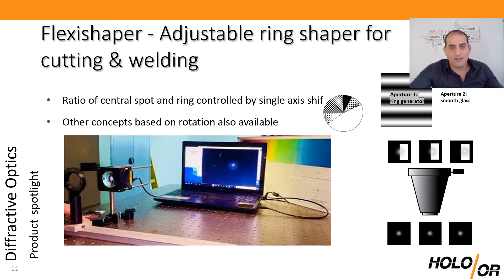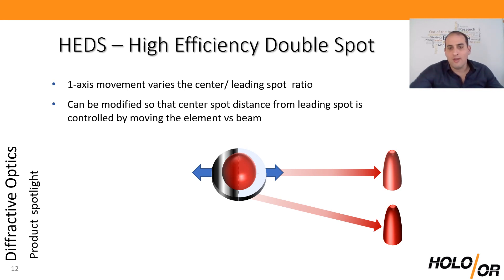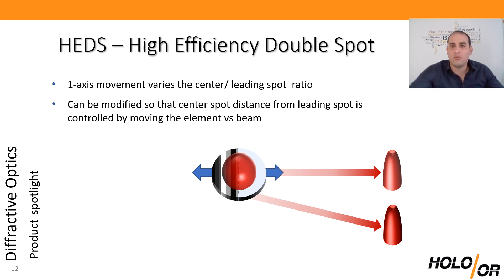Other types of adjustable DOEs are HEADS — high efficiency double spot splitters. These are diffractive prisms that allow you to play with the ratio of power between two split orders. The half-HEADS variant has a diffractive blaze grating on one side and a clear aperture on the other: half the light passes through unaffected, the other half is deflected at a controlled angle. By moving the beam versus the aperture, you can play with the ratio of the two spots — highly useful for dual spot welding.